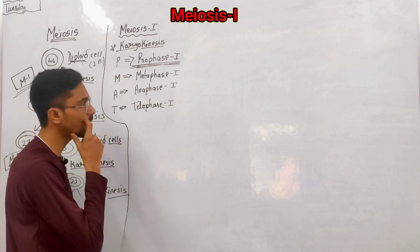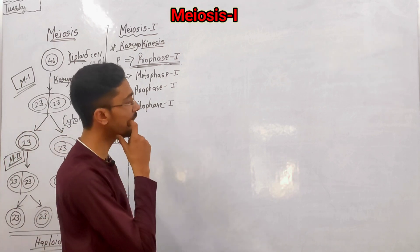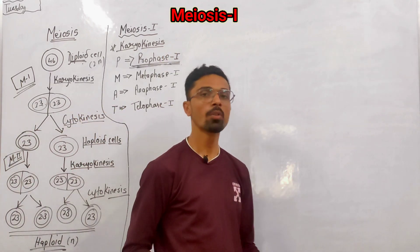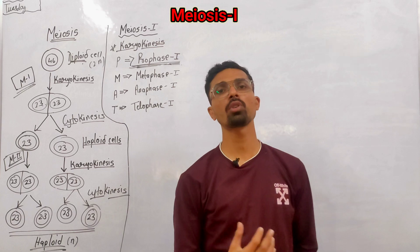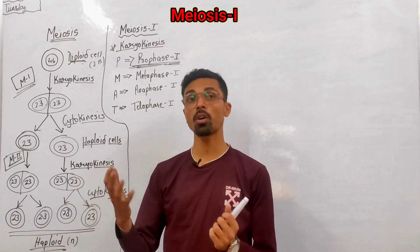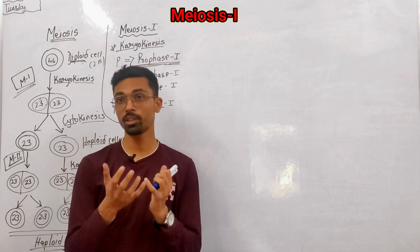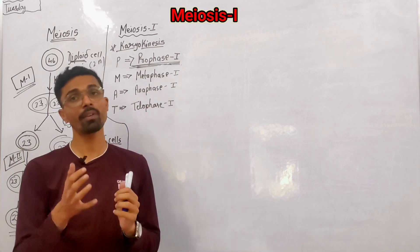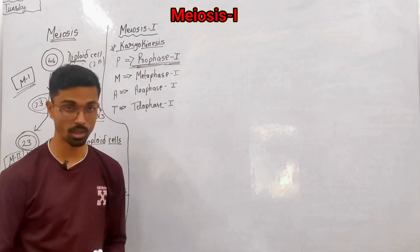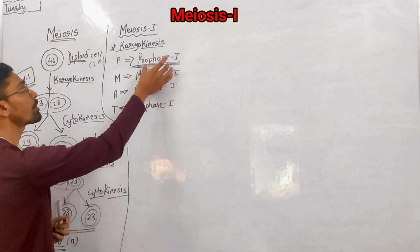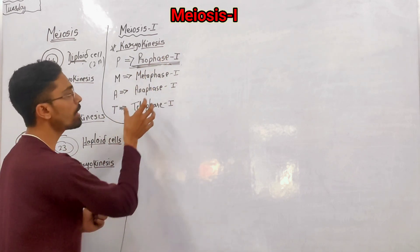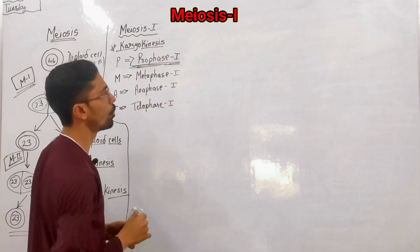As we have completed the prophase 1, where we got 46 different chromosomes — all in pairs, right — we have 23 pairs and all 23 pairs have different chromosomes. What happens after the prophase? We will see metaphase, anaphase, and telophase.